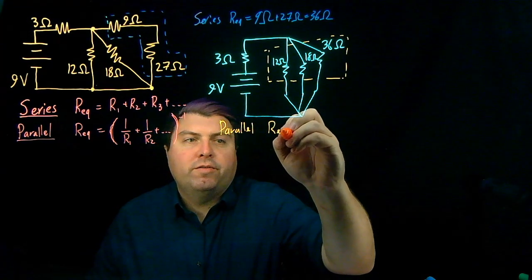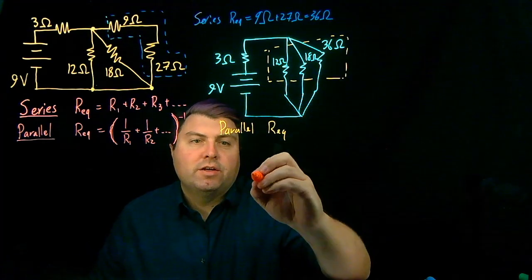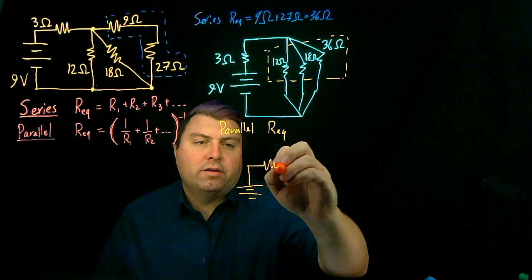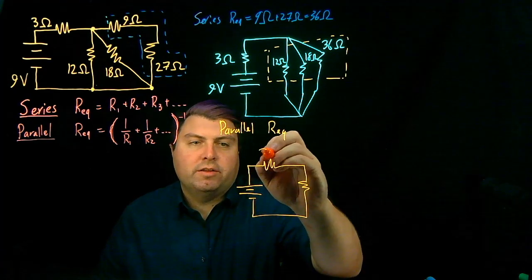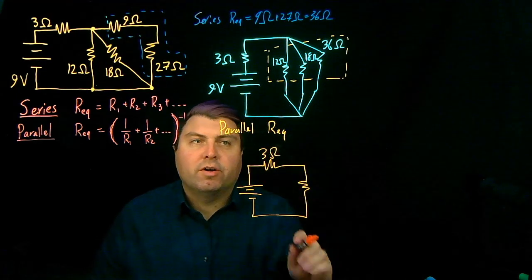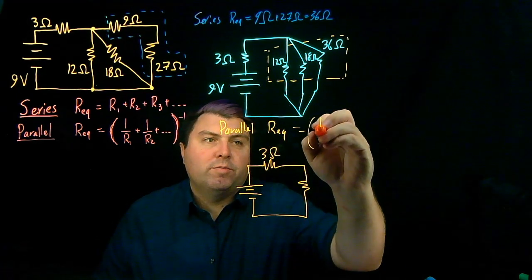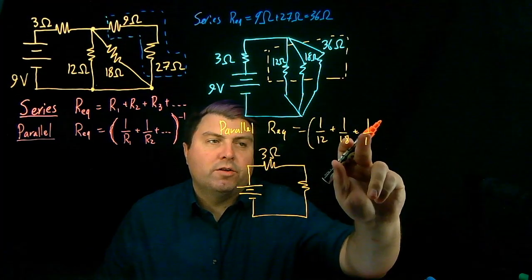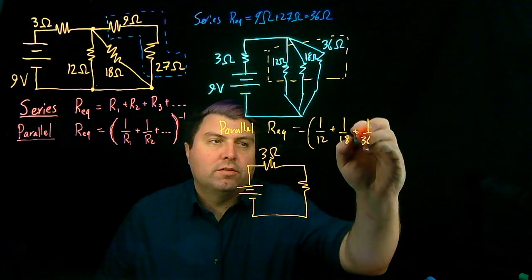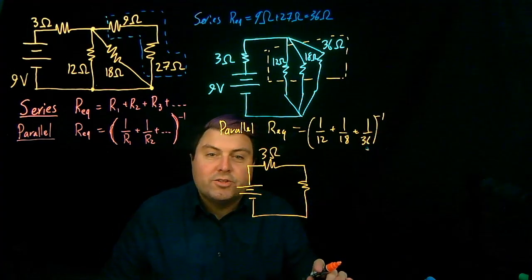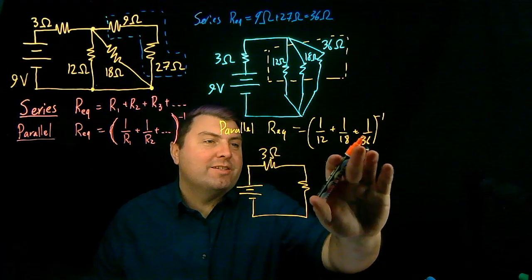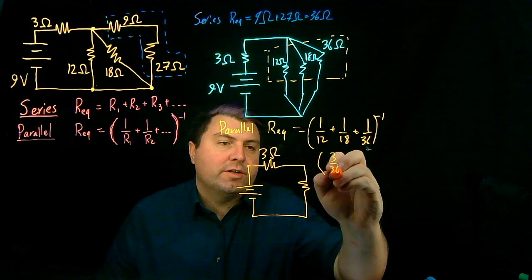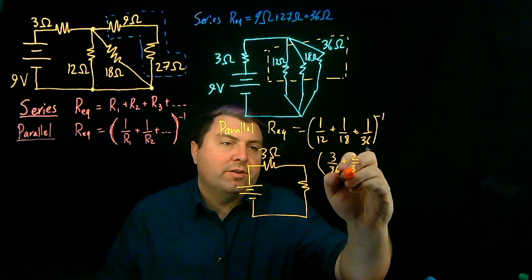So our equivalent for all of these, as we redraw this into a two resistor circuit, this is 3 ohm and this is what our equivalent is going to be, is going to be 1 over 12 plus 1 over 18 plus 1 over 36. I've made this such that it's easy to do. All of them have a common denominator of 36, so it's 3 over 36 plus 2 over 36 plus 1 over 36.